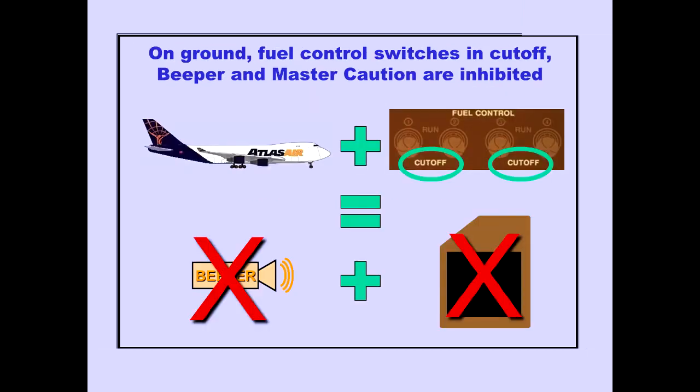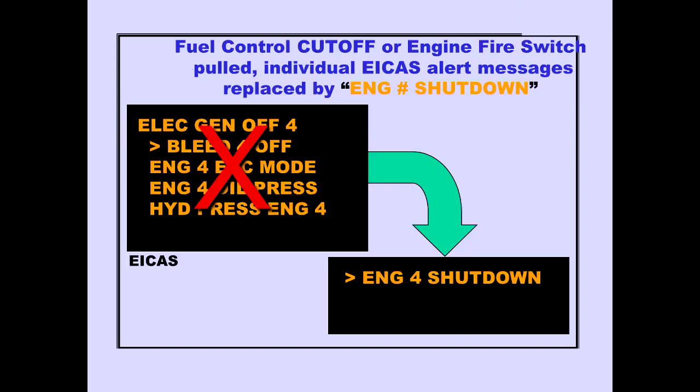When the airplane is on the ground and all fuel control switches are in cutoff, the beeper and the master caution lights are inhibited for all ICAST caution messages. When the fuel control switch is in cutoff or the engine fire switch is pulled out, individual ICAST alert messages are replaced by the ICAST message engine shutdown. This prevents an engine shutdown from filling the display with inappropriate messages.